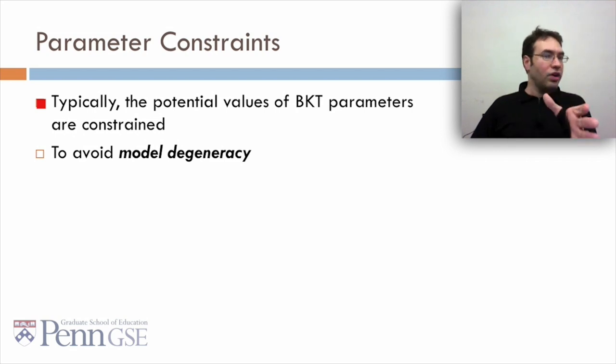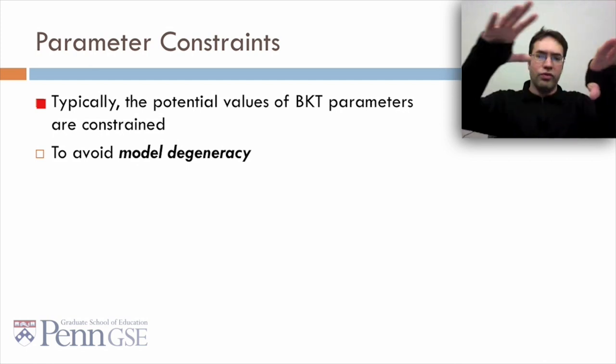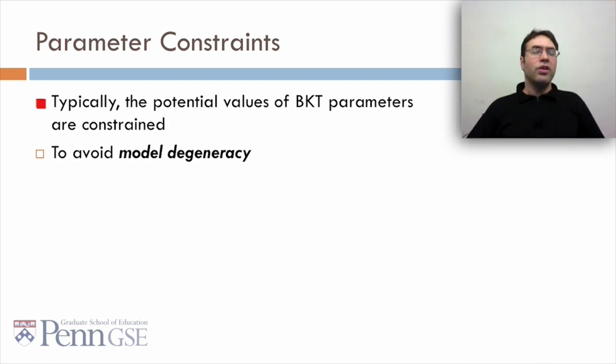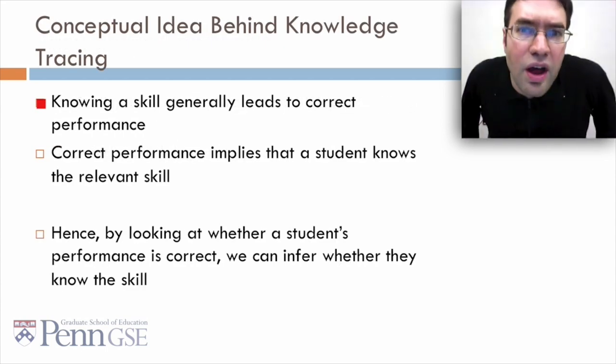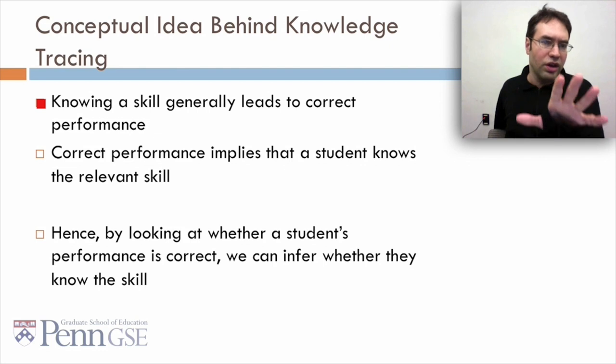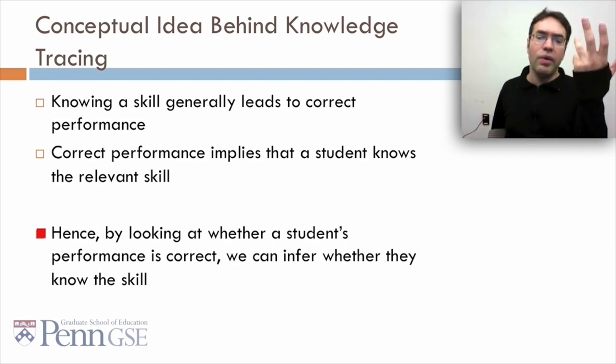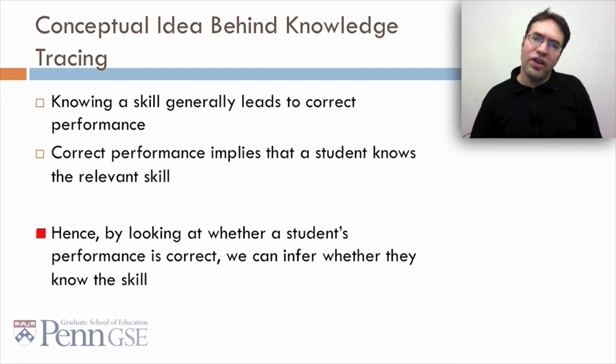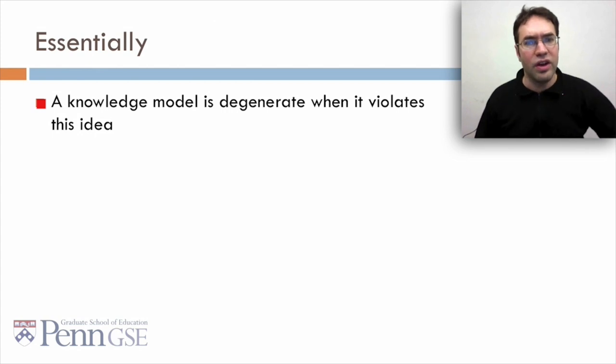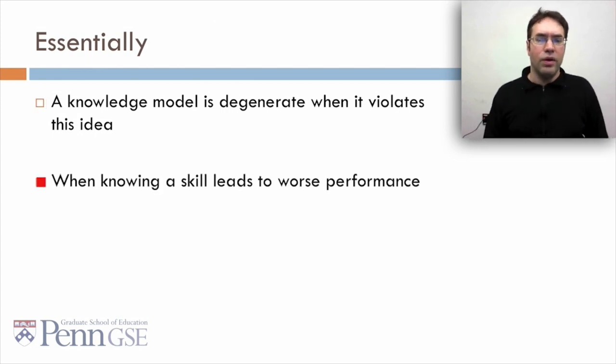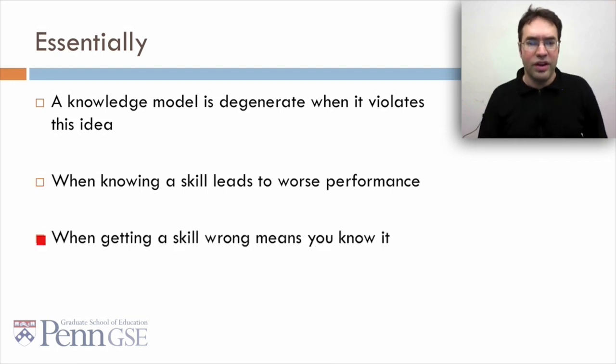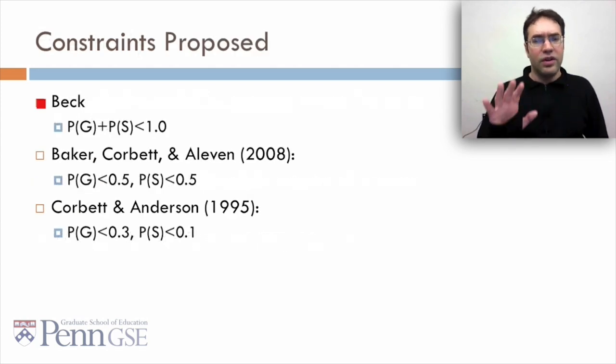Typically, the potential values of BKT parameters are constrained. I mentioned that the guess and slip we had are kind of low, and so the model is fairly dynamic. We do want to constrain those values somewhat to avoid what's called model degeneracy. Model degeneracy is based on violating the conceptual idea behind knowledge tracing. That conceptual idea is knowing a skill generally leads to correct performance, and correct performance implies that a student knows the relevant skill. If you can't trust these things, you're kind of in trouble. So hence, the idea is by looking at whether a student's performance is correct, we can infer whether they know the skill. And again, if you can't trust that, you're in trouble. Essentially, a knowledge model is degenerate when it violates this idea. When knowing a skill leads to worse performance and getting a skill wrong means that you know it. It's weird, right? That's why it's called a degenerate model.